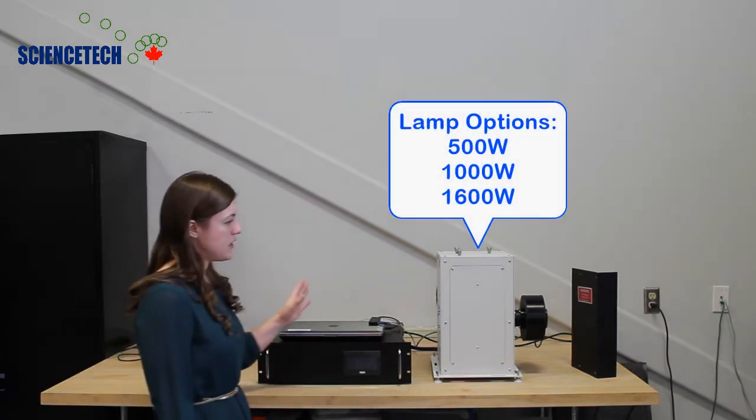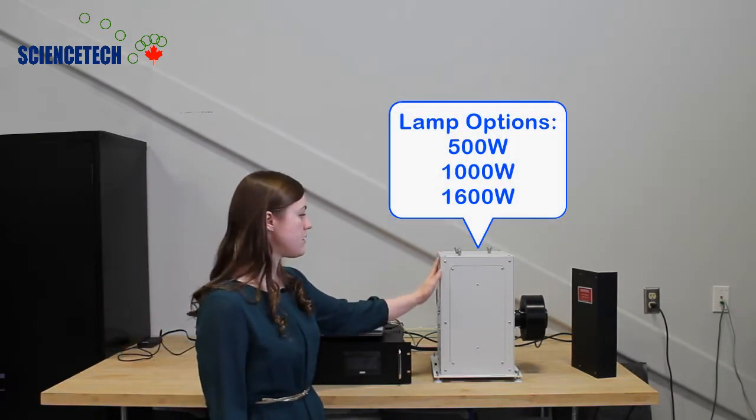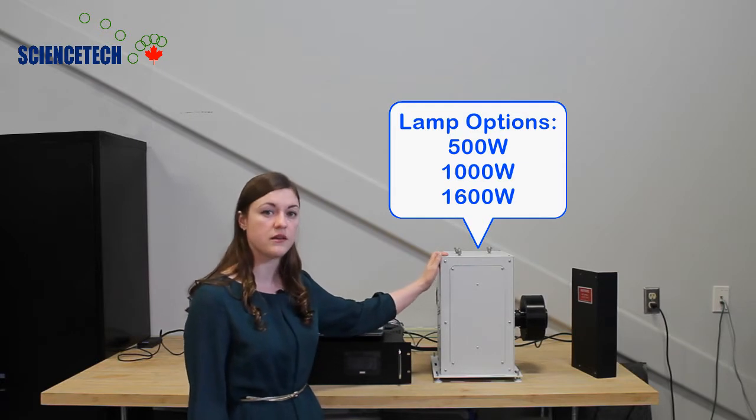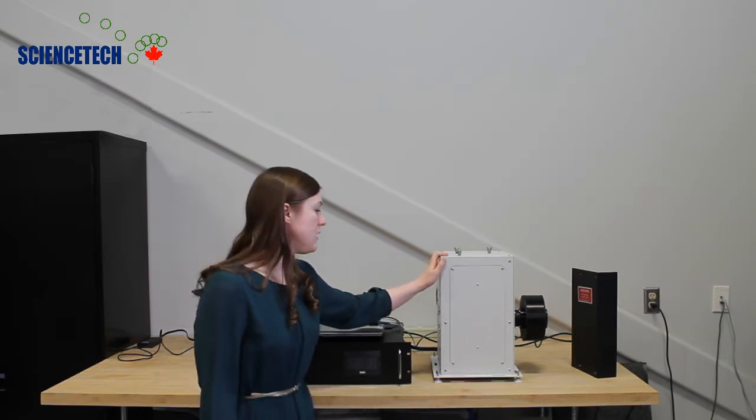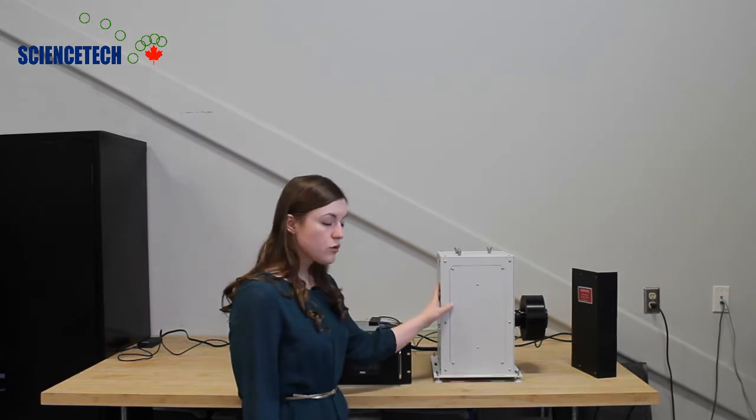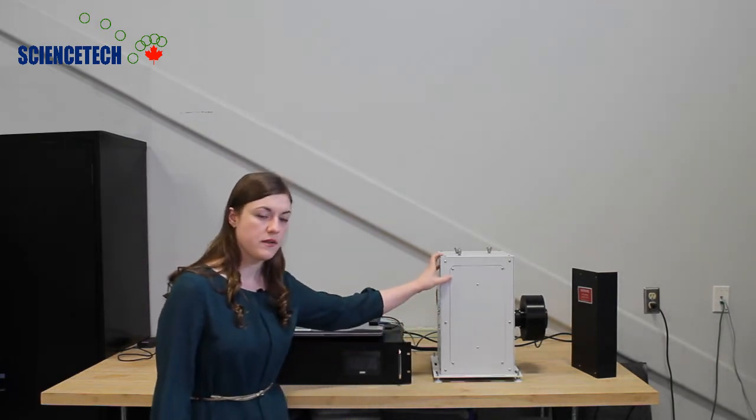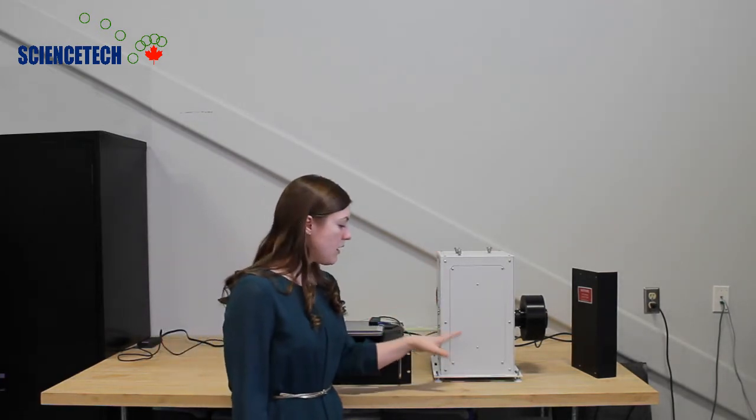This housing can accommodate 500 watt, 1000 watt and 1600 watt Xenon short arc lamps. Right now it's in the vertical orientation but it can also be operated in the horizontal orientation. Either way the base plate is available with leveling feet.